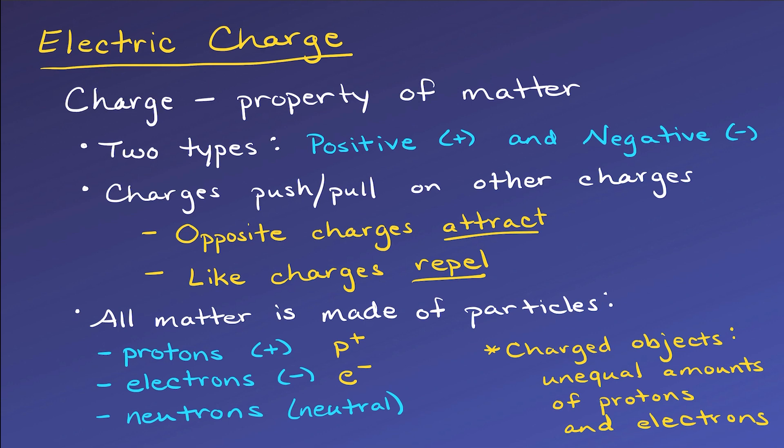If the object has the same number of protons and electrons, the charge will perfectly cancel out, leaving the object neutral with no charge. Excess protons leave the object positively charged, and excess electrons leave the object negatively charged.